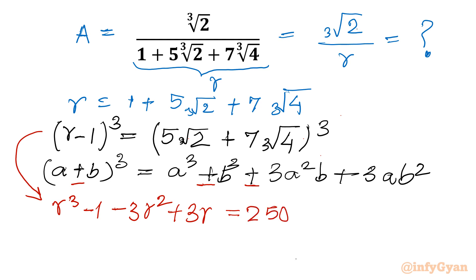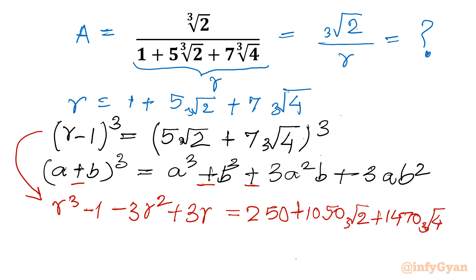Then for the 3A²B term, this value will be 1050 cube root of 2. Checking the third term, it will become 1470 cube root of 4. And the constant term — (7 cube root 4)³ — that would be 1372.